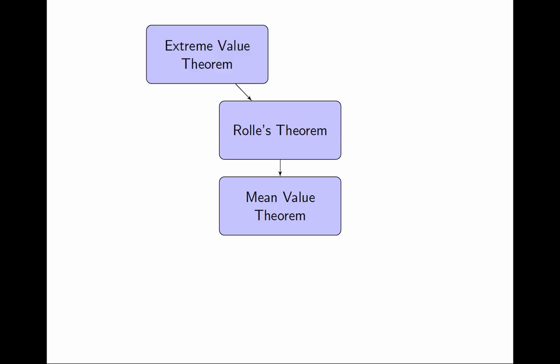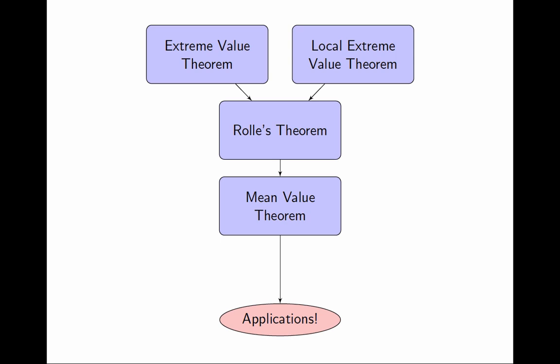And in order to prove Rolle's theorem, we need two other theorems. One that we already know, the extreme value theorem, and another one that, for lack of a better name, I'm going to call the local extreme value theorem. So this is going to be the path that we take with the sole goal of eventually getting to the mean value theorem, and then there will be profit. All the applications we want will come out of the mean value theorem.